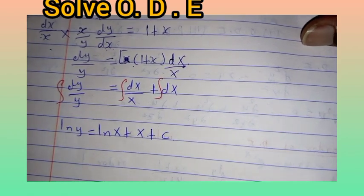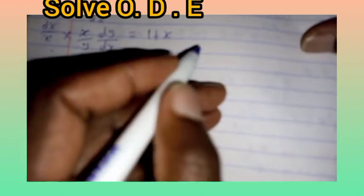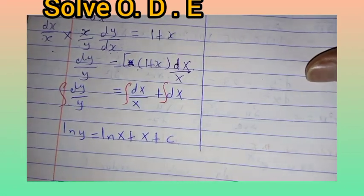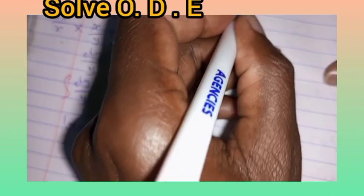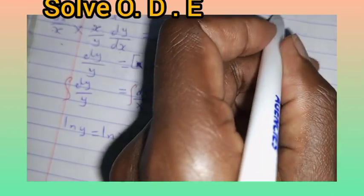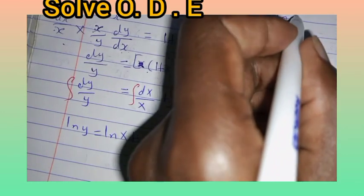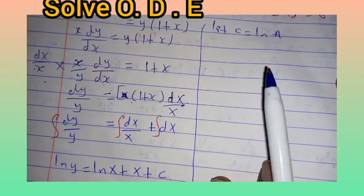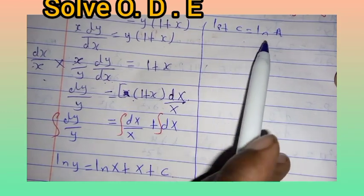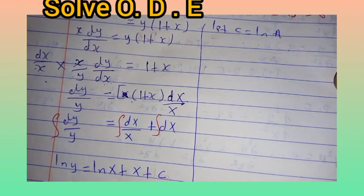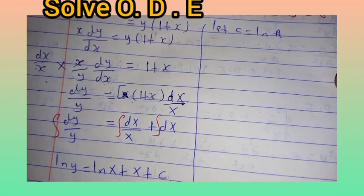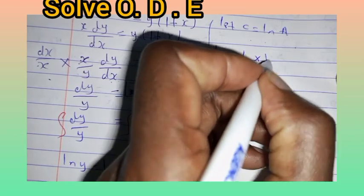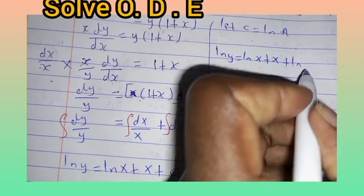Our objective is to obtain the value of y. We let constant c equal the natural logarithm of a, because a constant c and ln(a) yield the same result. So we rewrite as: ln(y) equals ln(x) plus x plus ln(a).